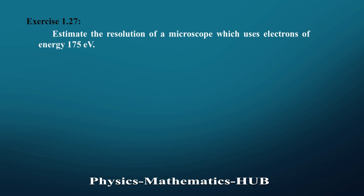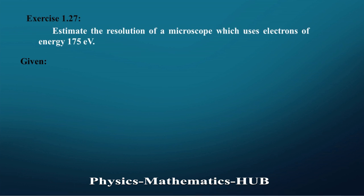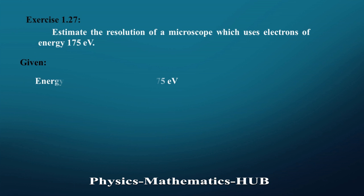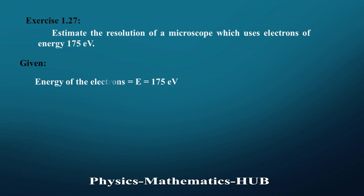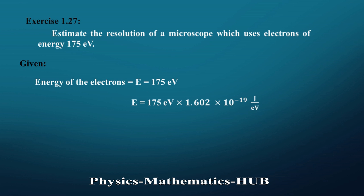We are given that the microscope uses electrons with energy of 175 electron volt. Converting to Joules, we multiply by 1.602 × 10⁻¹⁹ joules per electron volt, and we get kinetic energy equal to 280.35 × 10⁻¹⁹ joules.